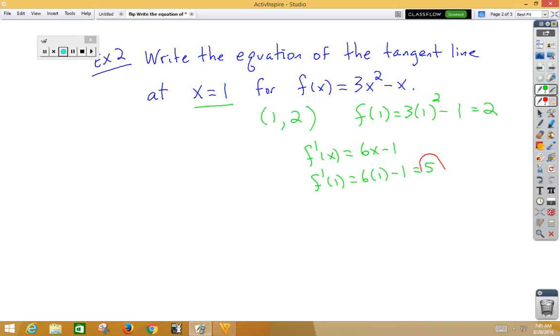Now we're going to take our slope of 5 and our point 1 comma 2 and put that into point slope form. y minus 2 is equal to 5 times x minus 1.